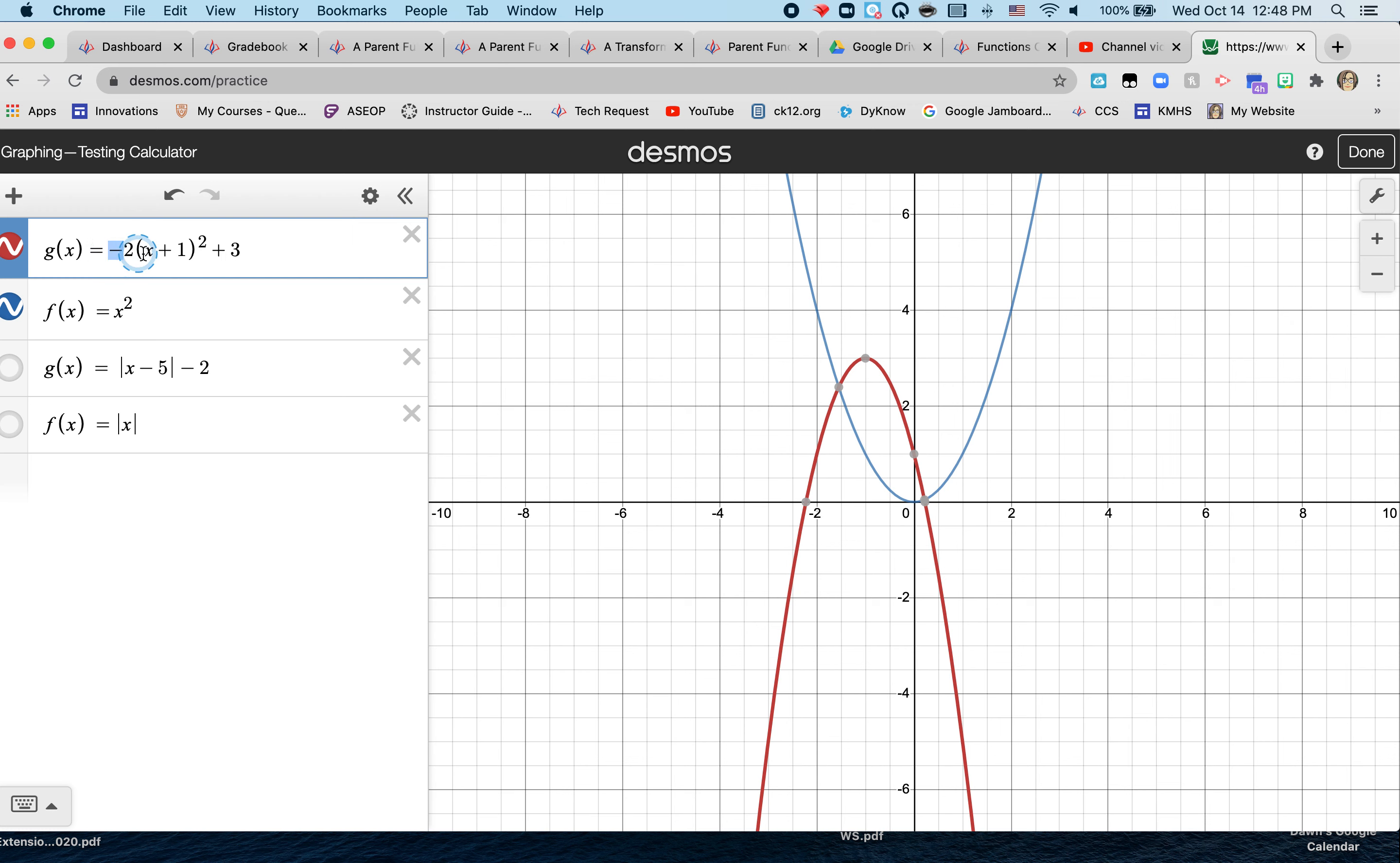So how does this g(x) move? It reflects over the x-axis, it becomes stretched or skinnier, it moves to the left one, and it moves up three places. So that is the first example.